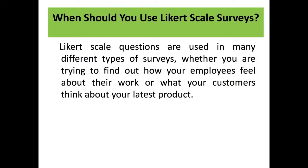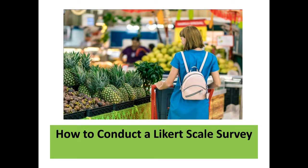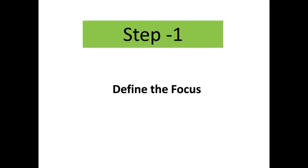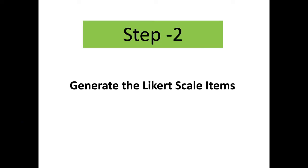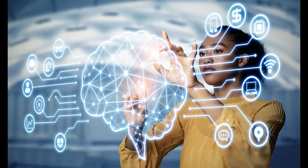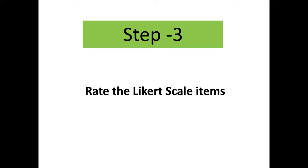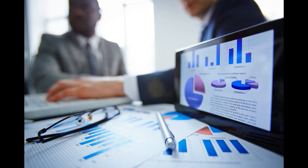Likert scale questions are used in many different types of surveys, whether you are trying to find out how employees feel about their work or what customers think about a latest product. To conduct a Likert scale survey: Step one — define the focus. Identify what you are trying to measure; your topic should be one-dimensional, such as customer service or the effectiveness of a particular website. Step two — generate the Likert scale items, which should be ratable on some kind of scale; for example, politeness could be rated from one (not polite at all) to ten (extremely polite). Step three — rate the Likert scale items by having a team go through the items and rate them as favorable, neutral, or unfavorable to your focus, then weed out items that are mostly seen as unfavorable.